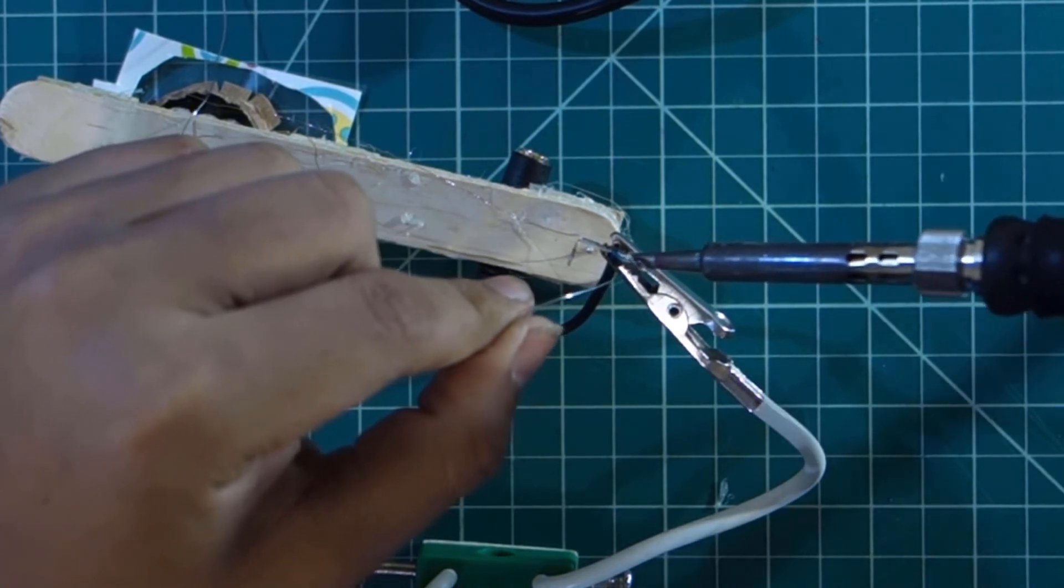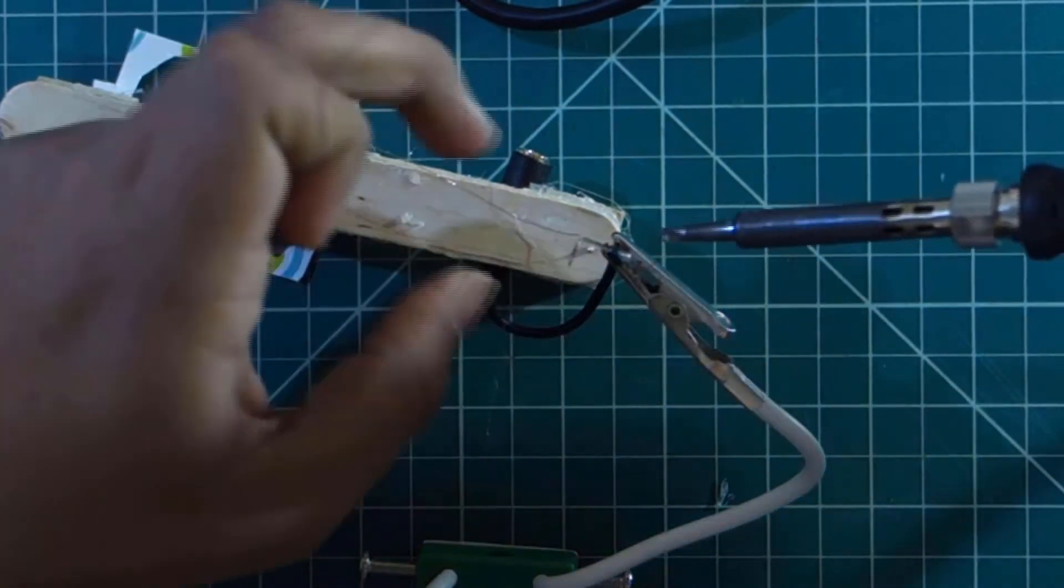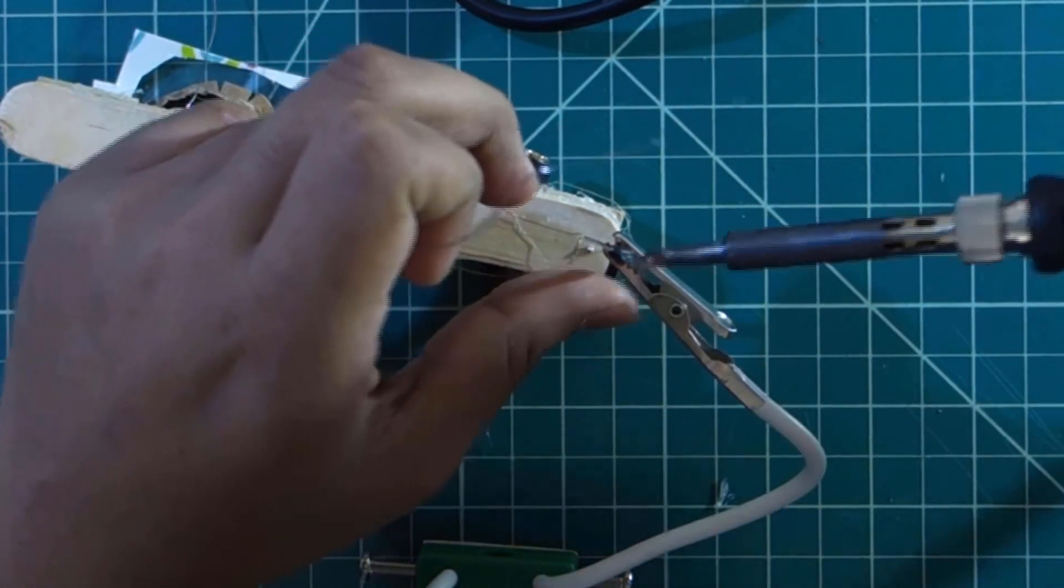Now take the 3.5mm female headphone jack and glue it down to the base. Now comes the most important part. You have to solder the two wires coming from the diaphragm to the ground and the microphone wire from the headphone jack. It varies from headphone to headphone so you have to experiment to find out which one is the correct one. Now secure the wires using hot glue. Make sure they don't touch each other.